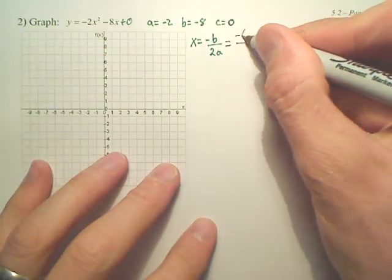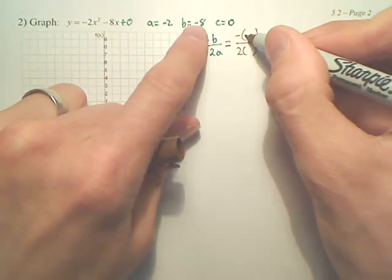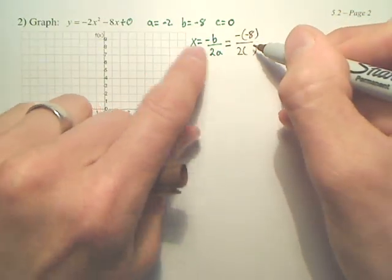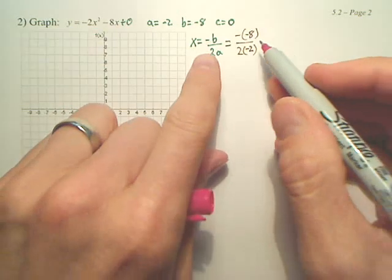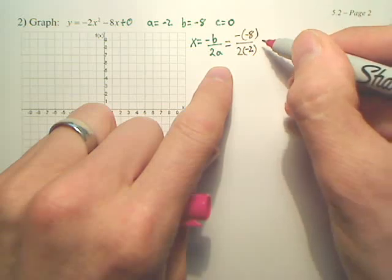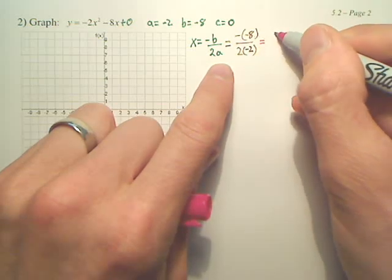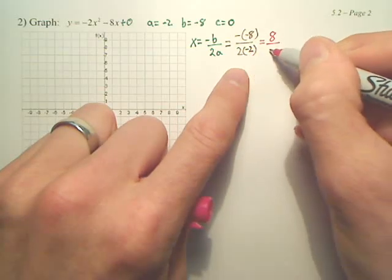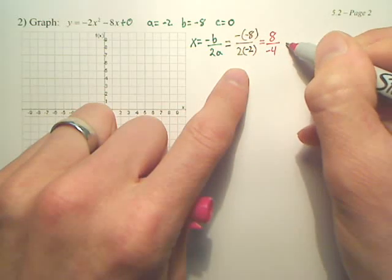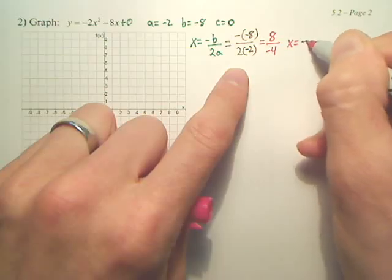The opposite of b over 2a. So b is negative 8 and a is negative 2. The opposite of b over 2a. Negative negative 8 is positive 8. 2 times negative 2 is negative 4. So what does x equal? Negative 2.